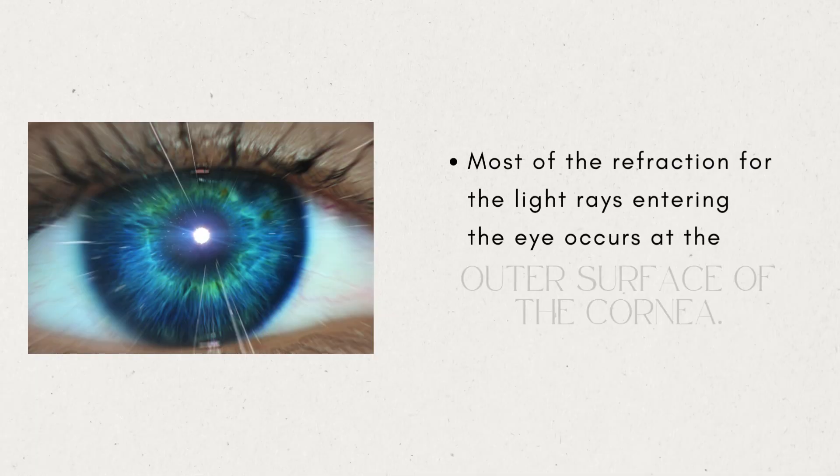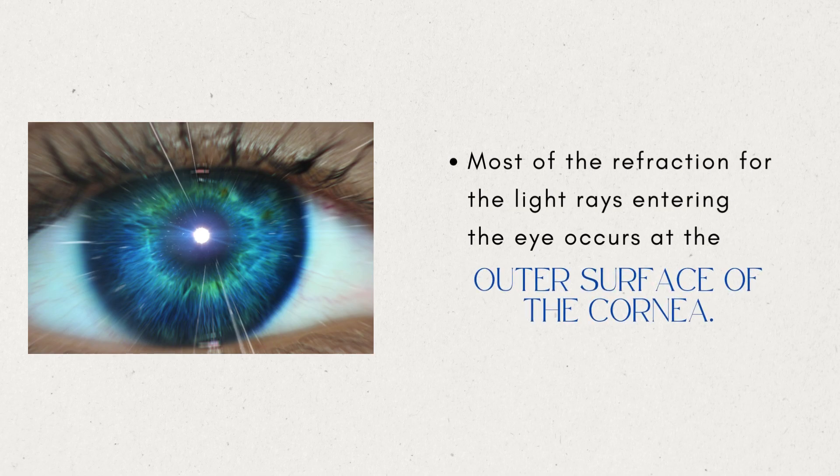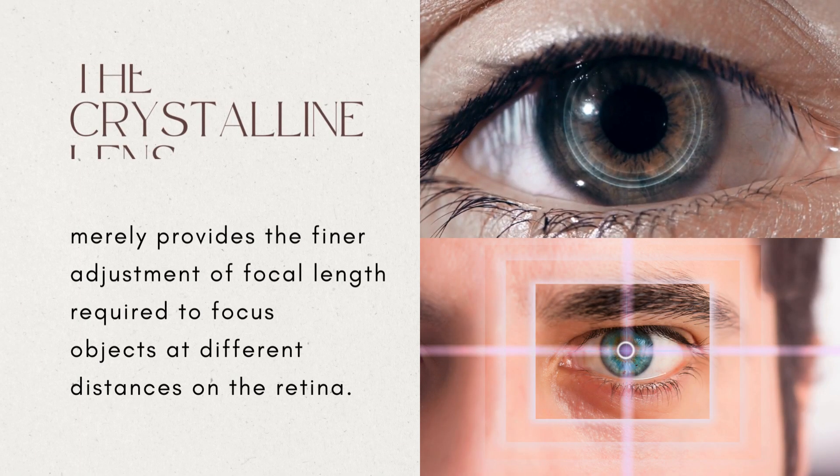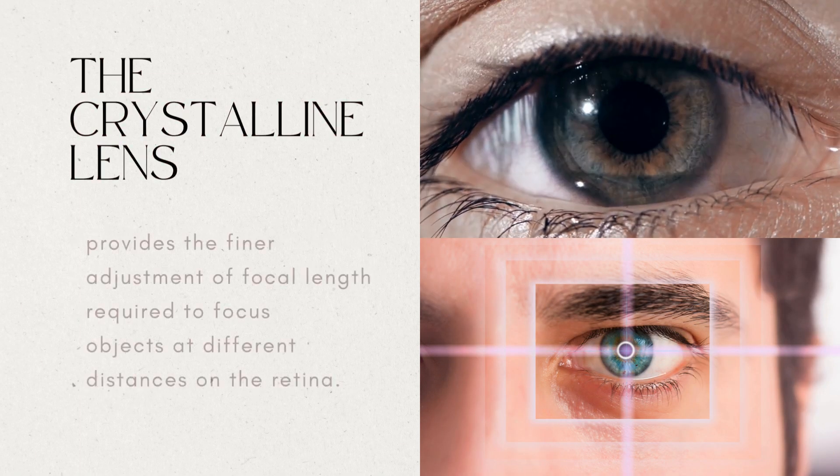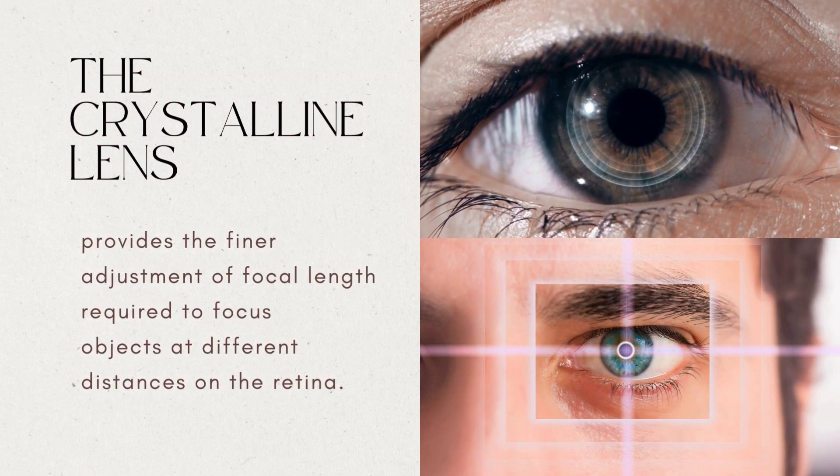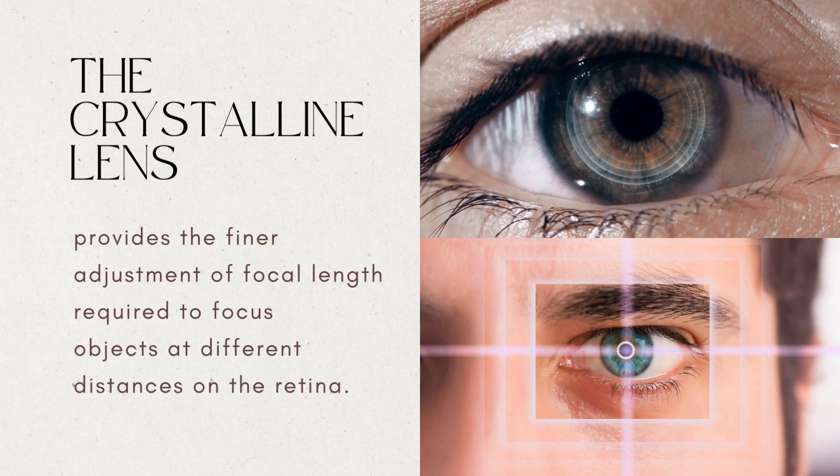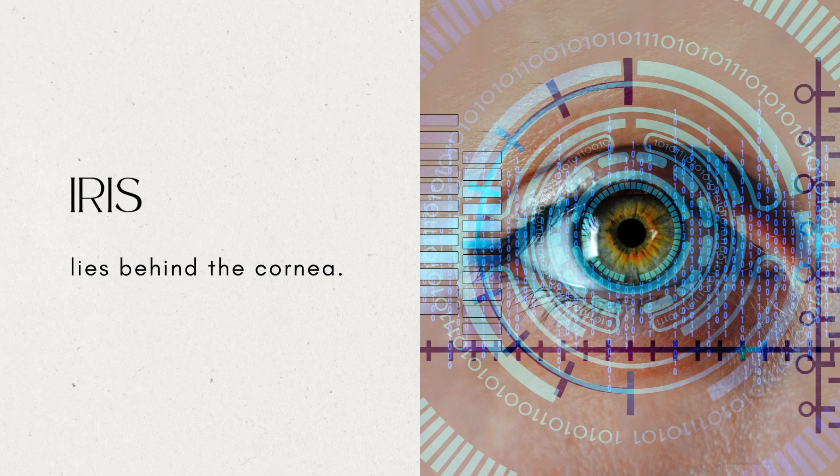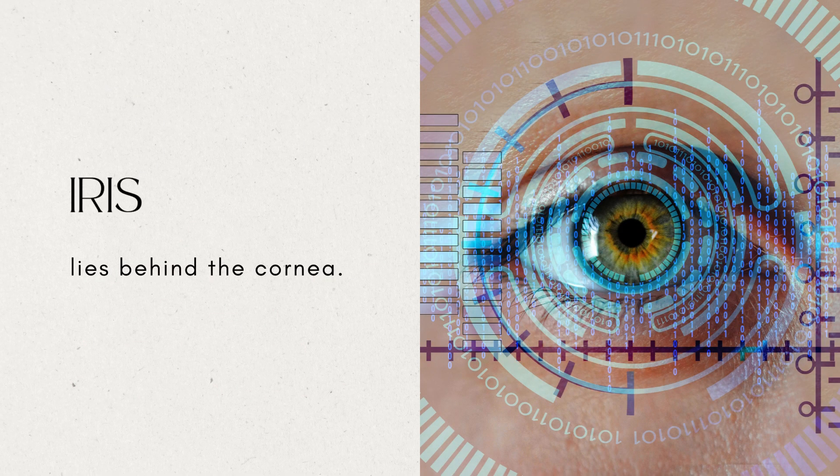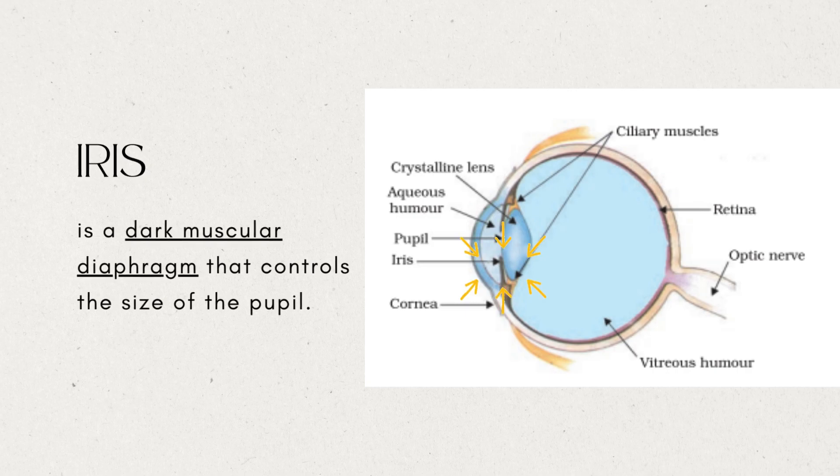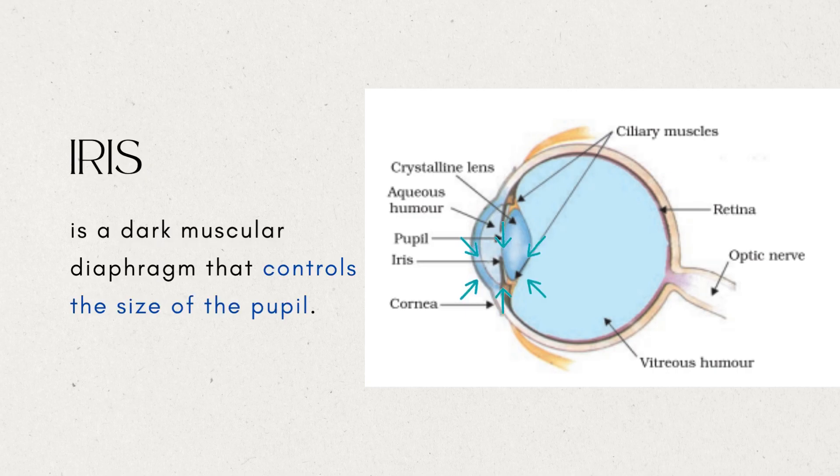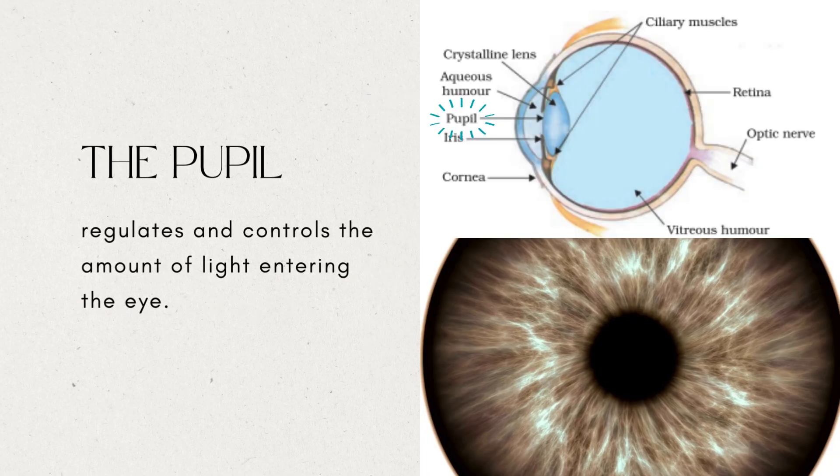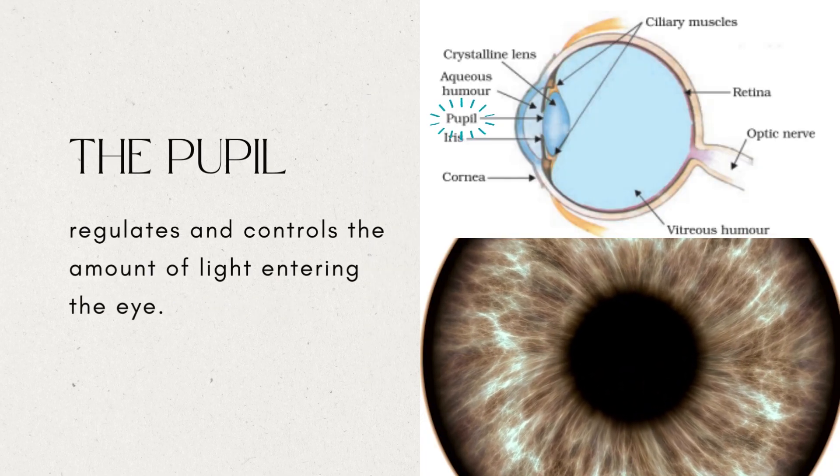Most of the refraction for the light rays entering the eye occurs at the outer surface of the cornea. The crystalline lens merely provides the finer adjustment of focal length required to focus objects at different distances on the retina. Behind the cornea, we find a structure called the iris. Iris is a dark muscular diaphragm that controls the size of the pupil. The pupil regulates and controls the amount of light entering the eye.